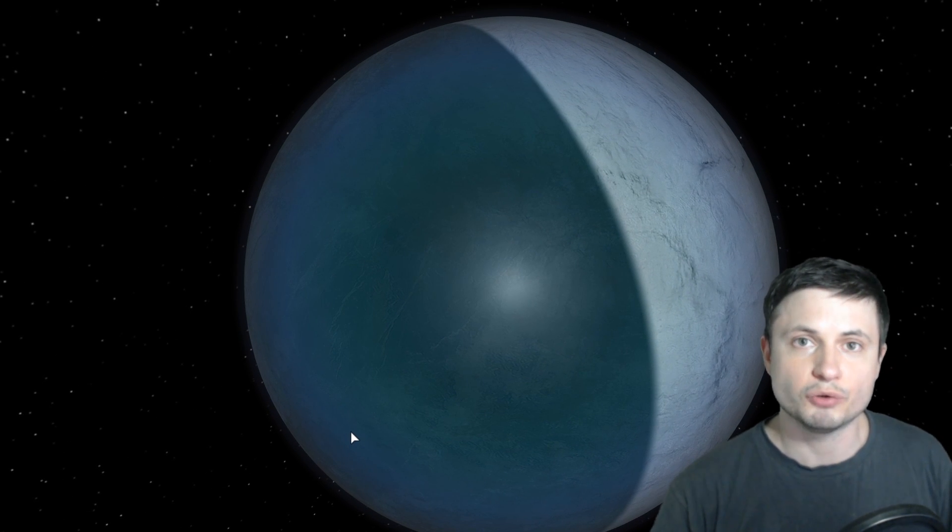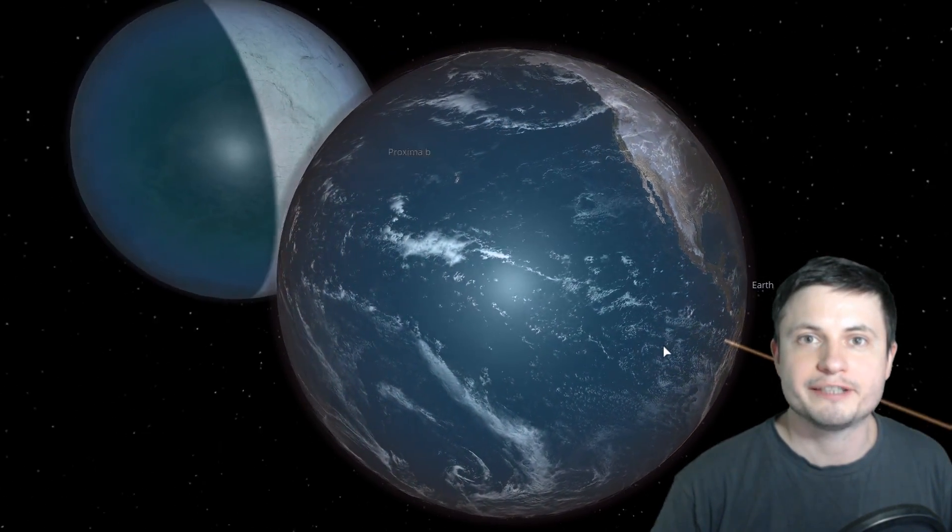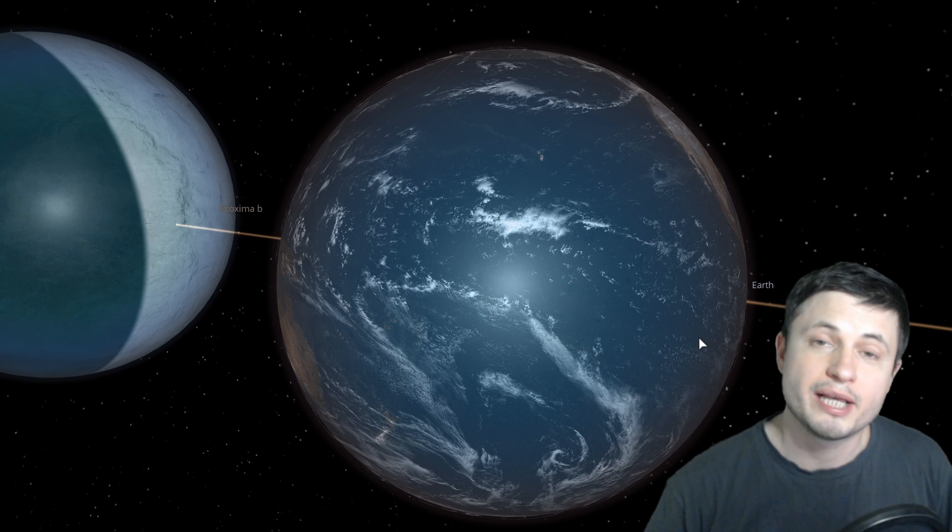Then the other two simulations involved our own planet Earth. So basically the scientists placed our planet in the same position as Proxima b and decided to see what would happen to Earth if it was in this location.